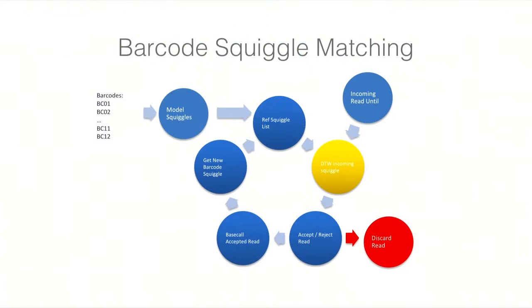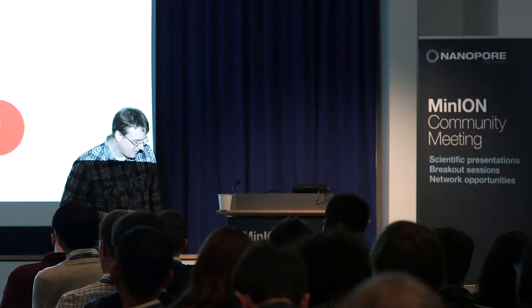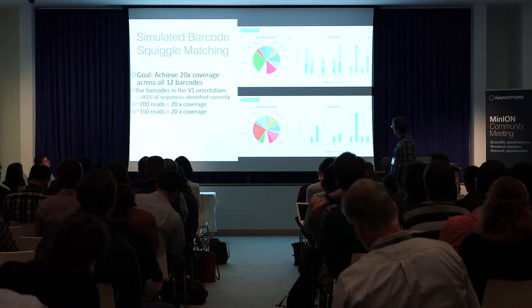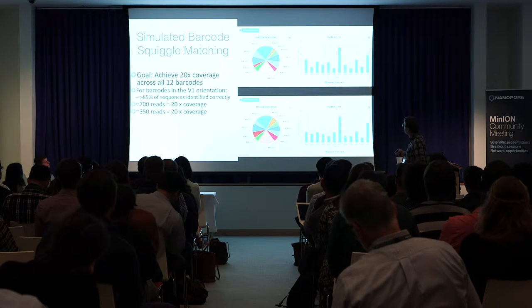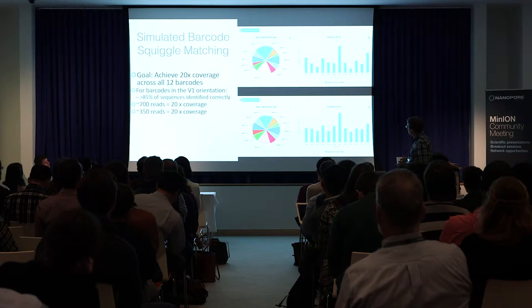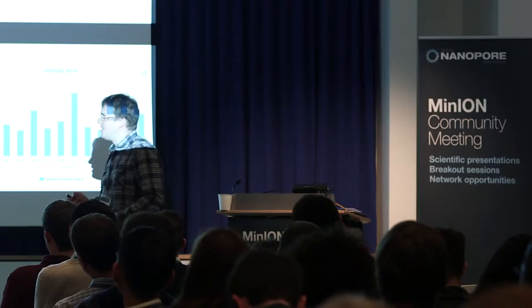We came up with an idea for looking at barcoded data — the idea that you might be able to take a model squiggle, compare it with a read coming in, and then choose whether or not to sequence that. This is real nanopore data but not running Read Until. At the top, you've got coverage for individual reads as data is generated. The bottom is the same data, but we stop sequencing once we reach 20x coverage. It takes about 700 reads to get 20x coverage normally, and 350 reads if you're running Read Until.